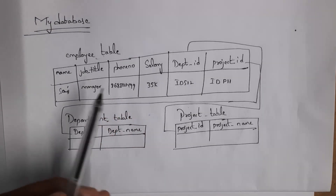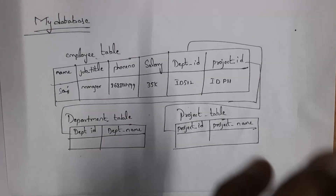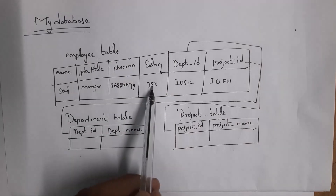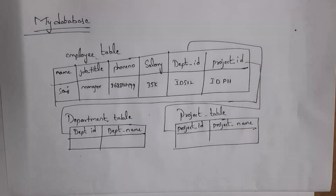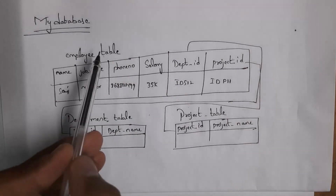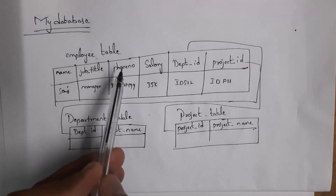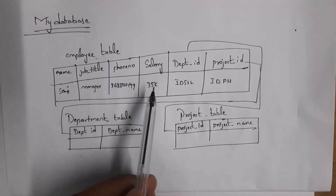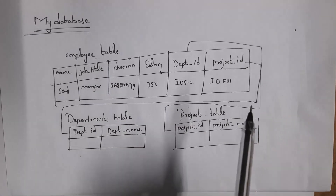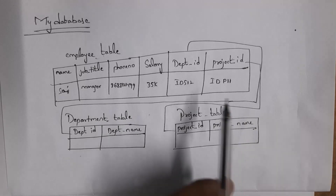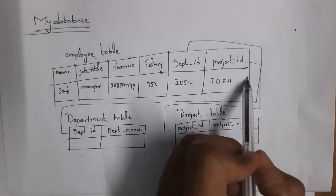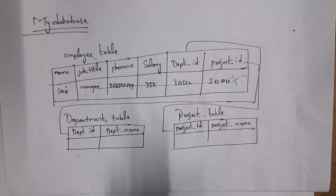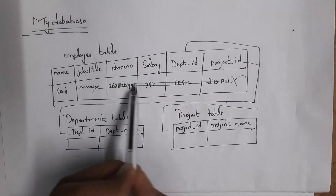Schema will represent only the structure of the database, but it will not display the actual data present in the database. For example, inside the employee table there is a record with name SAI, job title manager, contact number, salary 35,000, and so on — but schema will not display this record. It will just display the structure of the database; it does not show actual data.